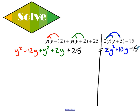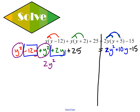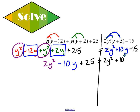On my left-hand side I do have terms I can combine. I have a y squared and a y squared, so that leaves me with 2y squared. I also have negative 12y and positive 2y — that's negative 10y. And I still have the plus 25. On the right side there are no like terms, so I leave it as it is. I need to get rid of my y squared, so I subtract 2y squared on both sides. I'm left with negative 10y plus 25 equals 10y minus 15.